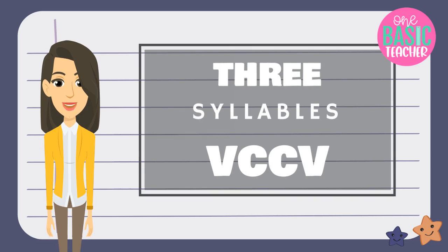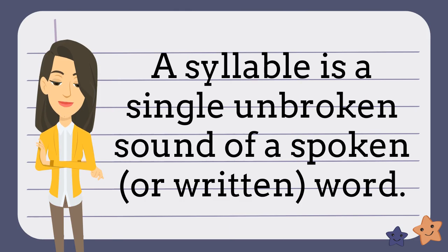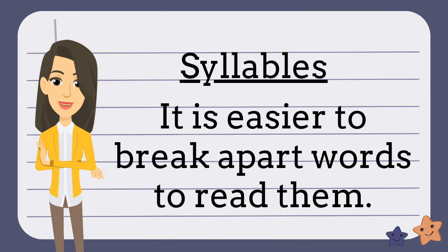In this episode, we're going to discuss how to syllabicate three-syllable words. Did you know that a syllable is a single sound of a spoken or written unbroken word? Some words have more than one syllable. When you are trying to read words that have many syllables, it might be hard to do, so we can break the word apart to make it easier to read.